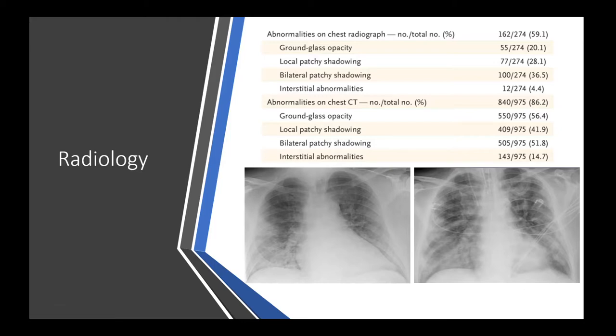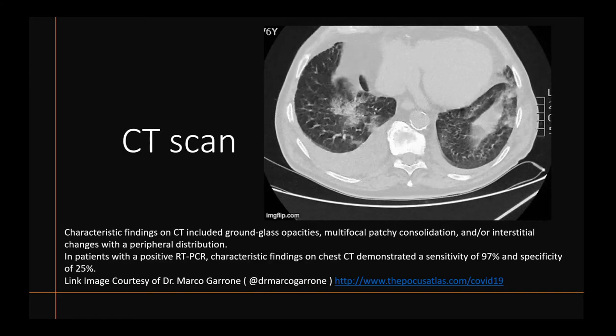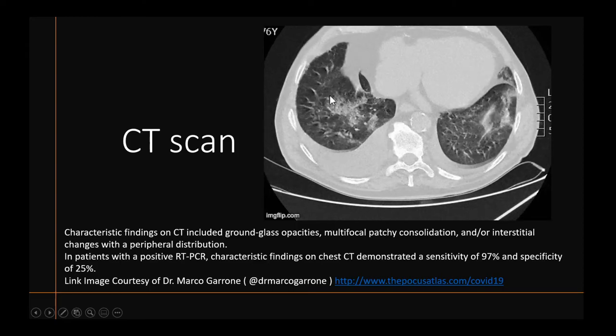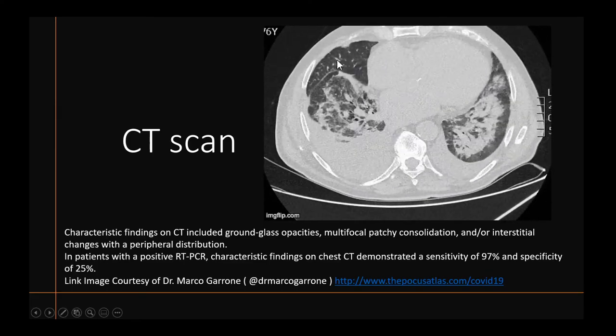On CT, the most common findings are also ground-glass opacity, local patchy shadowing, bilateral patchy shadowing, and interstitial abnormalities. Ground-glass opacification on CT refers to increased attenuation in the lung with preserved bronchial and vascular markings. It is a non-specific sign with wide aetiology including infection, chronic interstitial disease, and acute alveolar disease. Here is a CT scan of a COVID patient — on the right-hand side you can see ground-glass shadowing with increased attenuation compared to the more anterior lung.